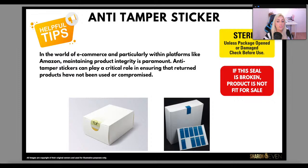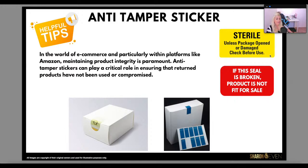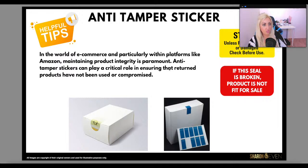A bonus tip — especially if you're using a paper box, envelope type, or rigid box — having an anti-tamper sticker can be very useful. In the world of e-commerce and particularly on platforms like Amazon, maintaining product integrity is paramount. Anti-tamper stickers can play a critical role in ensuring that return products have not been used or compromised. For example, it could say 'sterile unless opened or damaged, check before use,' or 'if the seal is broken, product is not fit for sale.' Very useful to have, especially in e-commerce when dealing with returns. If a product is returned to Amazon and Amazon can see it's been tampered with, hopefully the warehouse worker will know not to return it to stock.